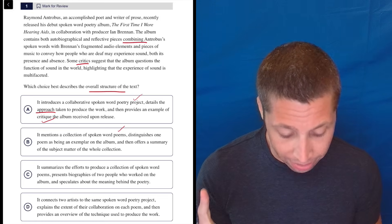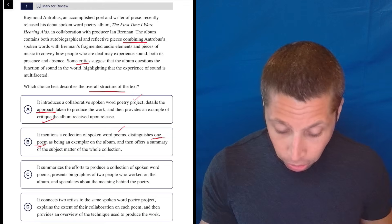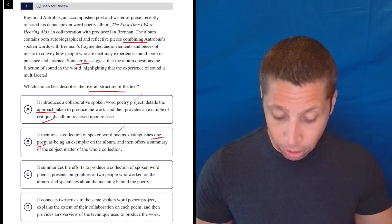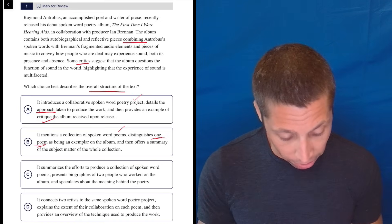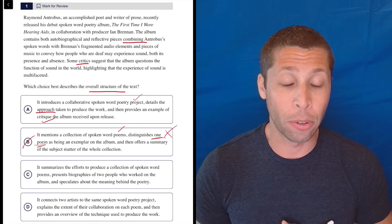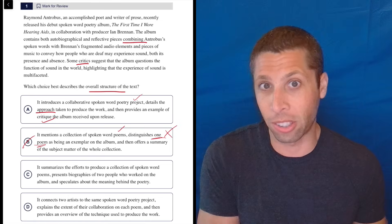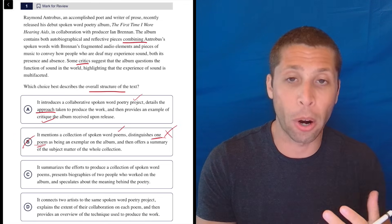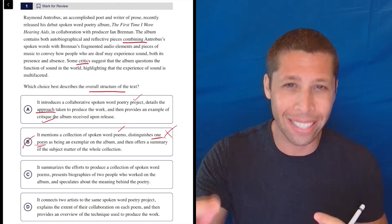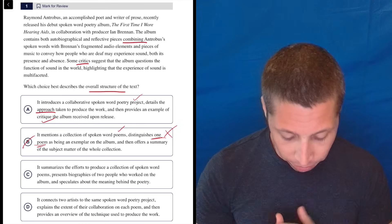So choice B. It mentions a collection of spoken word poems. I feel like it did do that. Distinguishes one poem as being an exemplar of the album. So did it mention one particular poem? No, it did not. It talks about things that the different poems do. The title that we get there is not the poem, it is the collection. So no, it does not do that. So I'm already going to stop reading. And for those of you who are worried about time, this might be one of those places where if you're really confident that halfway through a choice, it says something that you know is not true, you can just kind of stop reading.